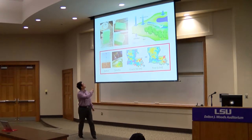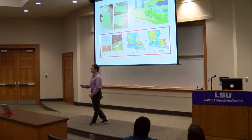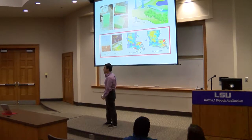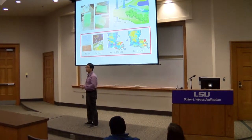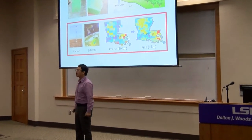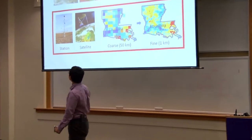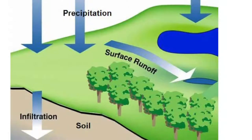Think of our soil as a sponge. When water is being added to the sponge slowly, all water can be absorbed. As the sponge gets wetter and soon reaches its holding capacity, water moves down through the sponge due to gravity. Likewise, when water is added to the soil slowly, all water can infiltrate the soil.